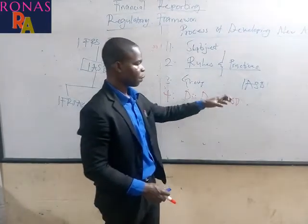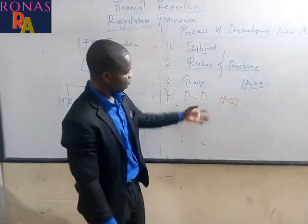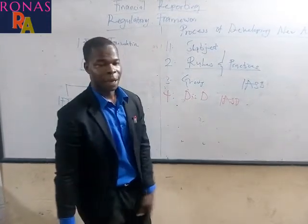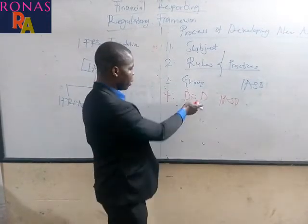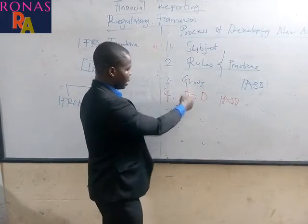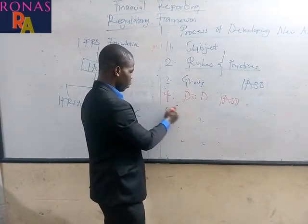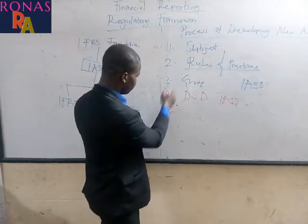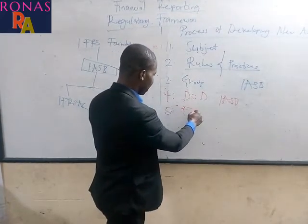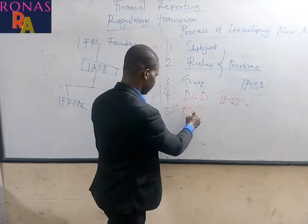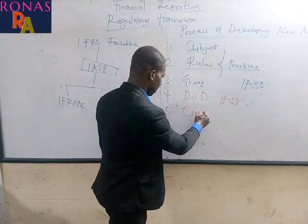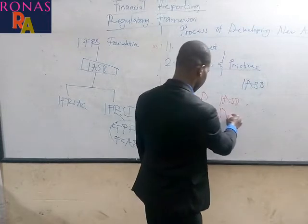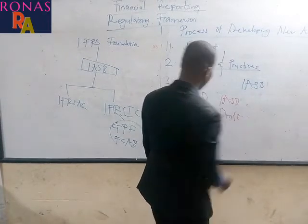After the public has reviewed and commented on the discussion document, the fifth step is that they issue another document called an exposure draft, also for the public to comment.